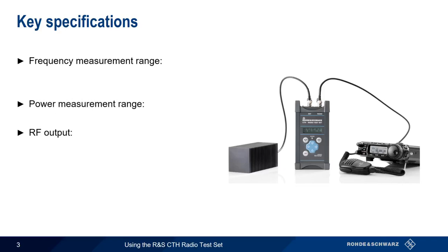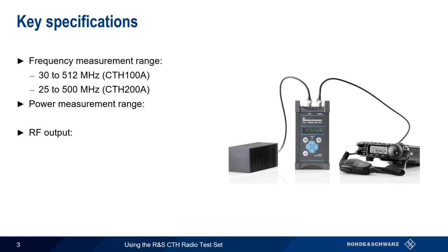The two models of the CTH have similar frequency ranges: 30–512 MHz for the CTH-100A, and 25–500 MHz for the other model. The CTH is able to measure power in the range of 0.1 to 50 watts.